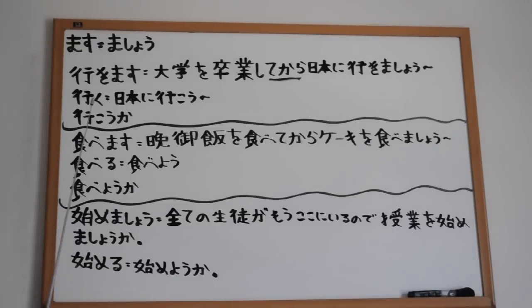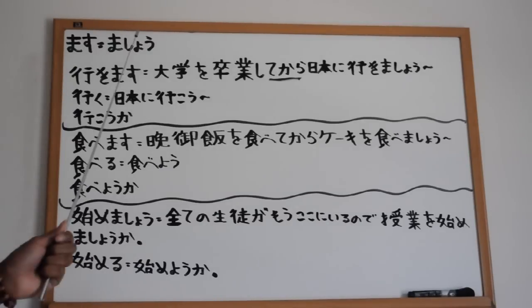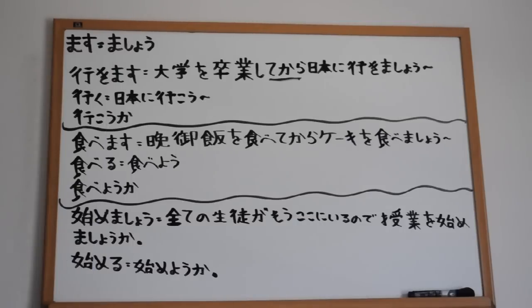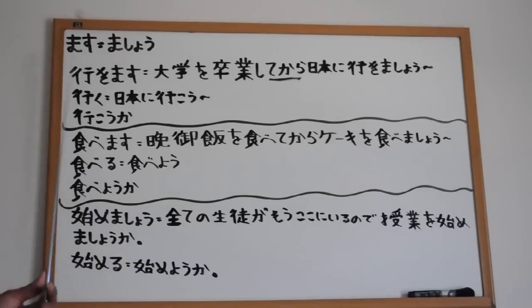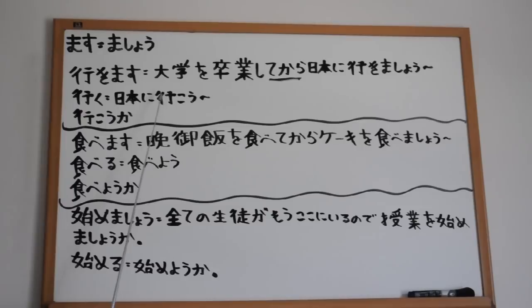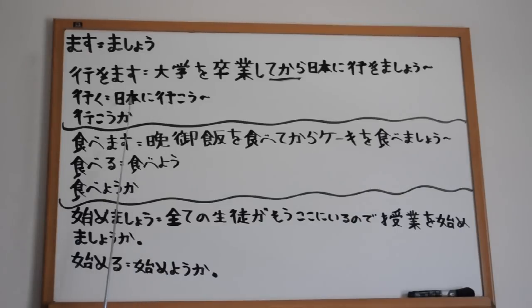Now, these here - iku - you guys know that's the dictionary form of ikimasu. There's also an informal way of saying this. The mashou form is going to be different. So iku being the dictionary form or infinitive, if you want to say let's do this, let's do that in the familiar form, it will look like this: ikou. Iku becomes ikou. For example, nihon ni ikou - let's go to Japan.